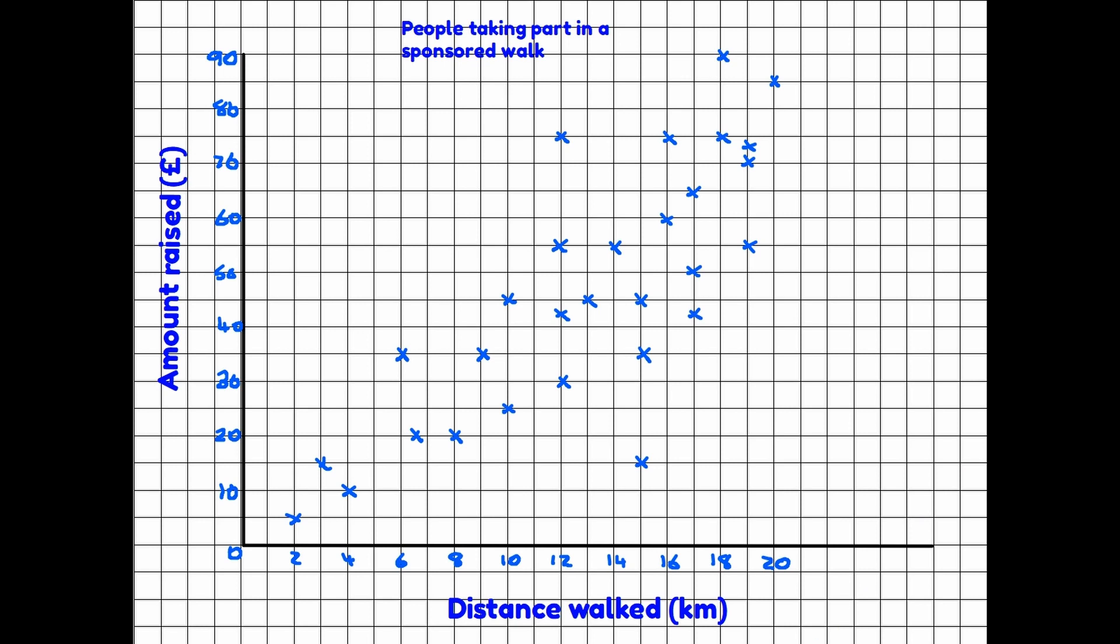If we look at any particular cross here, we have a person who walked eight kilometers and raised 20 pounds. Our job is to decide is there a connection between how far people have walked and the amount of money raised. The way we do this is look at the graph as a general picture to see whether we can see a pattern. If we take a closer look, we can see that in this area here there are no crosses at all - there's nobody on this walk that has walked a relatively short distance and raised a lot of money.